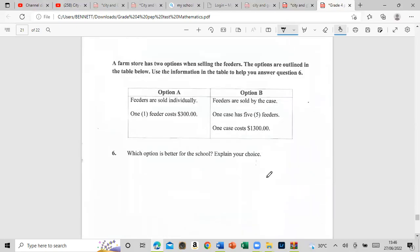Number six: a farm store has two options when selling the feeders. Option A: feeders are sold individually, meaning one feeder costs $300. Option B: feeders are sold by the case. One case has 5 feeders, and one case costs $1,300. Which option is better for the school? Explain your choice. Go ahead and try that one.